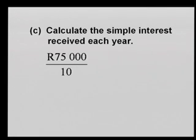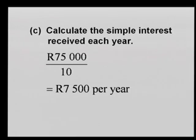Seventy-five thousand Rand — think about that, you did nothing. You don't want to put your money under the bed — that's the worst thing you can do. For part C: calculate the simple interest received each year. As pointed out, you get the same interest every year with simple interest. So seventy-five thousand divided by ten gives you seven thousand five hundred Rand per year. This shows the power of savings — if you can save from a young age, you're going to be very wealthy.